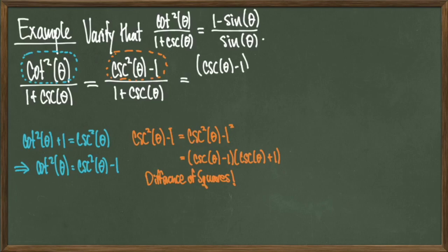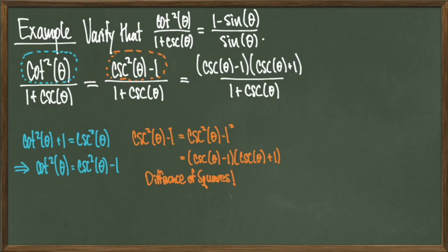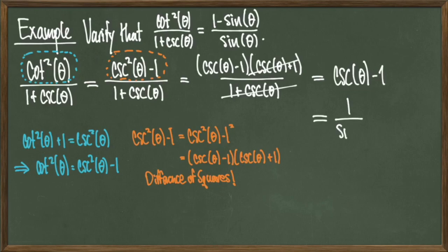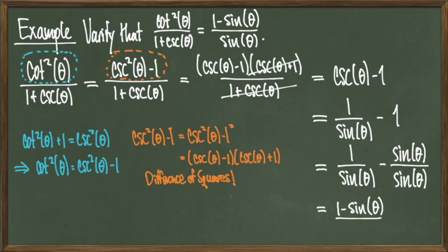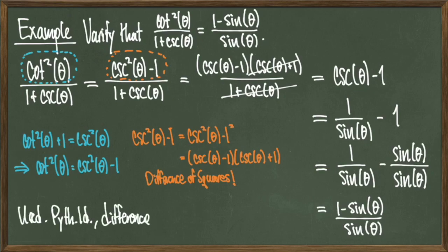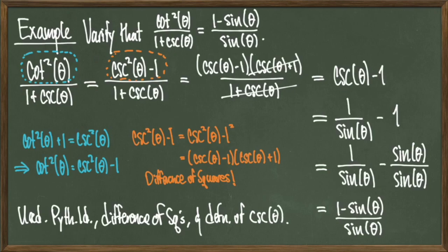Making this replacement in the equation, I end up with cosecant theta minus 1 times cosecant theta plus 1 over 1 plus cosecant theta. This cancellation gives me cosecant theta minus 1. Cosecant theta can be replaced with 1 over sine of theta, which simplifies to 1 over sine of theta minus 1, which is what we wanted to show. The tools used were the Pythagorean identity, difference of squares, and the definition of cosecant.